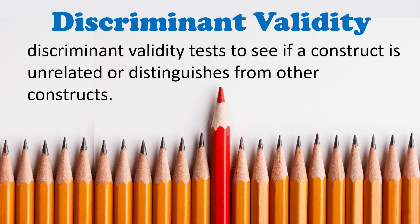Discriminant validity is really this idea that are your constructs different from one another? Do they distinguish from one another? Sometimes in models we will have two constructs that are very highly correlated with one another, and the argument can be made that you don't really have two different constructs — maybe it's just one real construct that you're measuring, calling it two different things. So discriminant validity is really this test to assess whether your constructs really distinguish from one another.